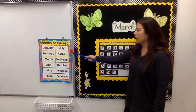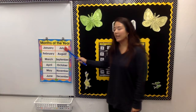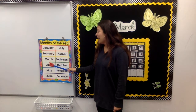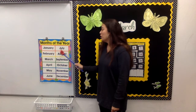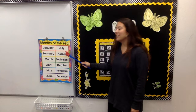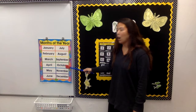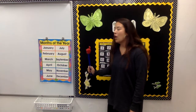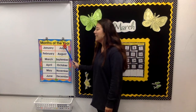Now let's move over here to our months of the year. January, February, March, and April, May, June, July, and August, September, October, November, December. Those are the months of the year.